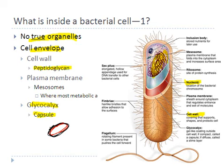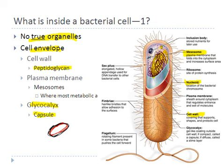So the glycocalyx is the outermost layer for bacteria with a capsule, then comes the cell wall. Inside the cell wall is the plasma membrane, also referred to as the mesosome, which folds into the cytoplasm to increase surface area. The cytoplasm is inside — a semi-fluid solution composed of water and organic and inorganic molecules, enclosed by the plasma membrane. Most activities take place in the mesosome, which is the cytoplasm-like structure of the bacteria.